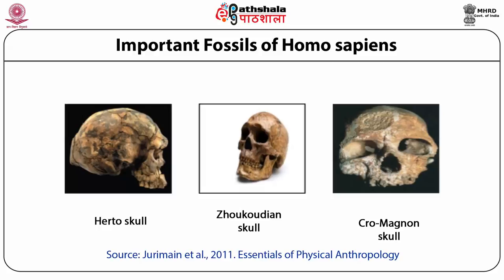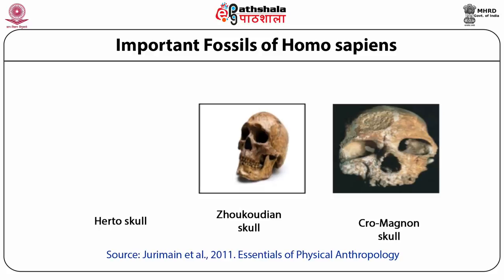Regarding Australian fossils, the earliest fossil remains discovered came from Lake Mungo in southeastern Australia, suggesting that the population in this region had modern anatomical features. Another important site is Cow Swamp, where fossils bear several archaic features, though post-cranial remains resemble Australian aboriginals. It is believed that humans migrated to Australia about 50,000 years ago and populated this continent.